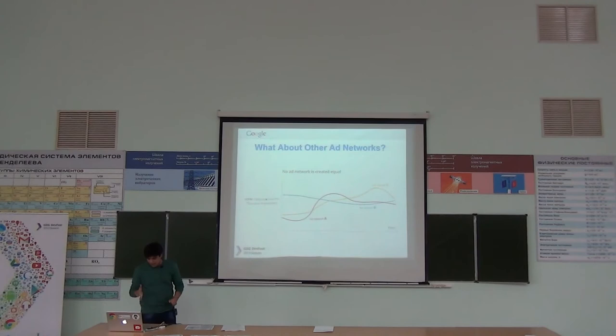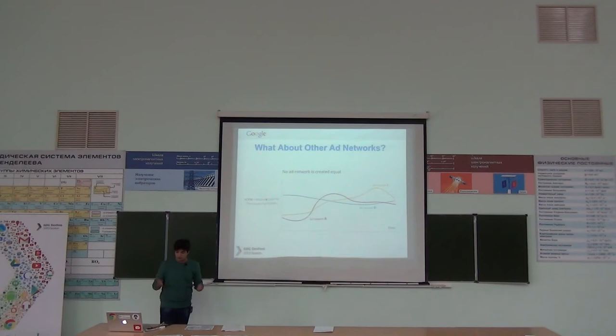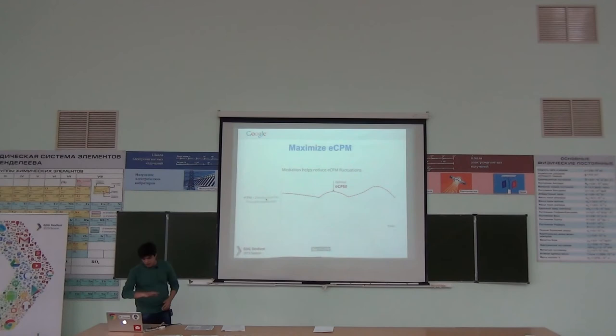This is a graph showing the technical standpoint. In one month AdMob was very low, and for another month it was very high. But we want consistent revenue. What mediation provides is the total sum, which gives you the optimal CPM every month.